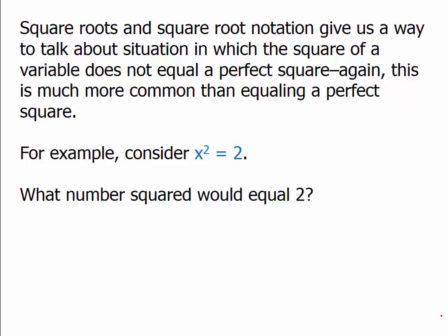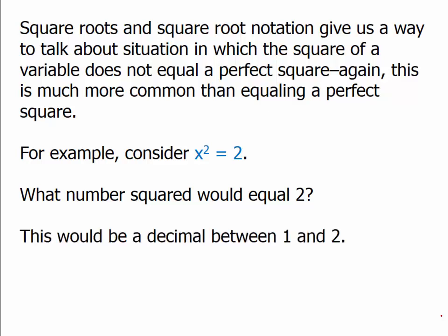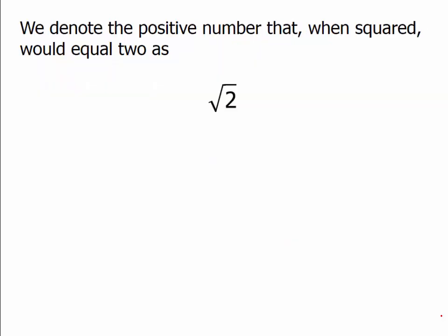What number squared would equal 2? Clearly it's not an integer; it would have to be a decimal, and that decimal would have to be between 1 and 2, because 1 squared is 1 and 2 squared is 4. So to get something squared equaling 2, it would have to be between those two. We denote the positive number that when squared would equal 2 with the square root symbol — sometimes called square root of 2, root 2, or radical 2.